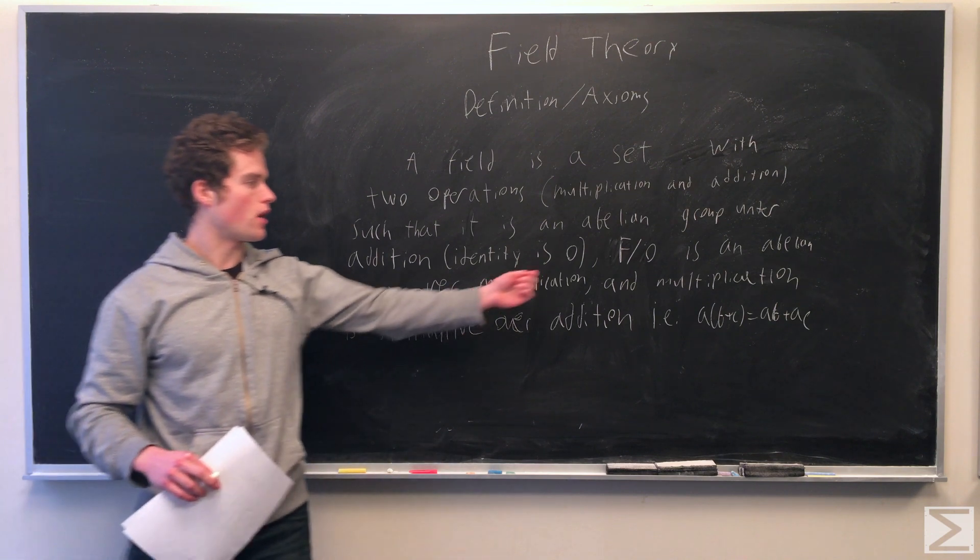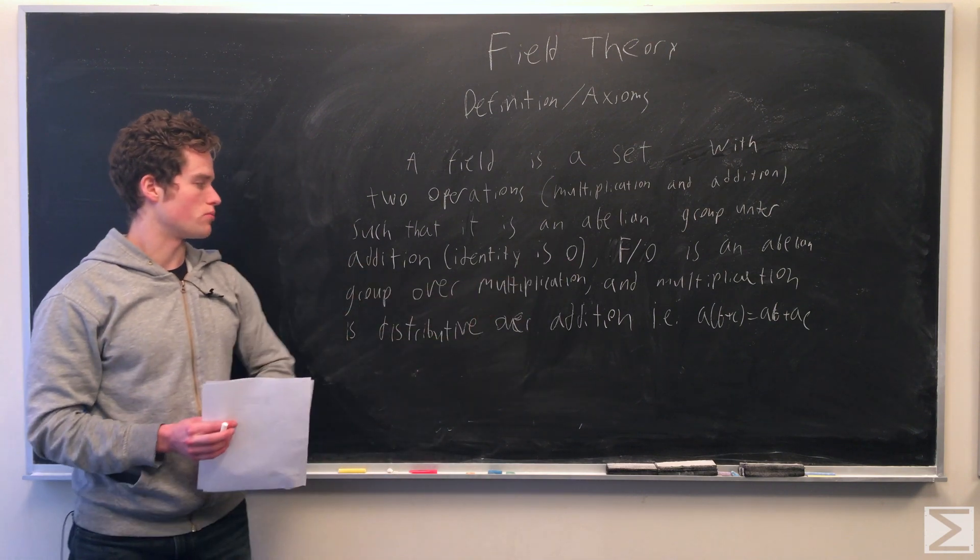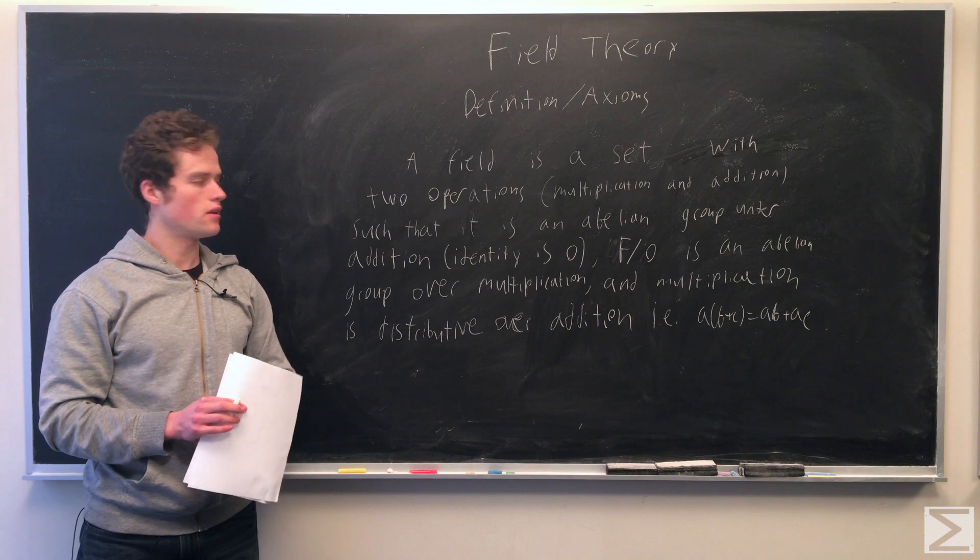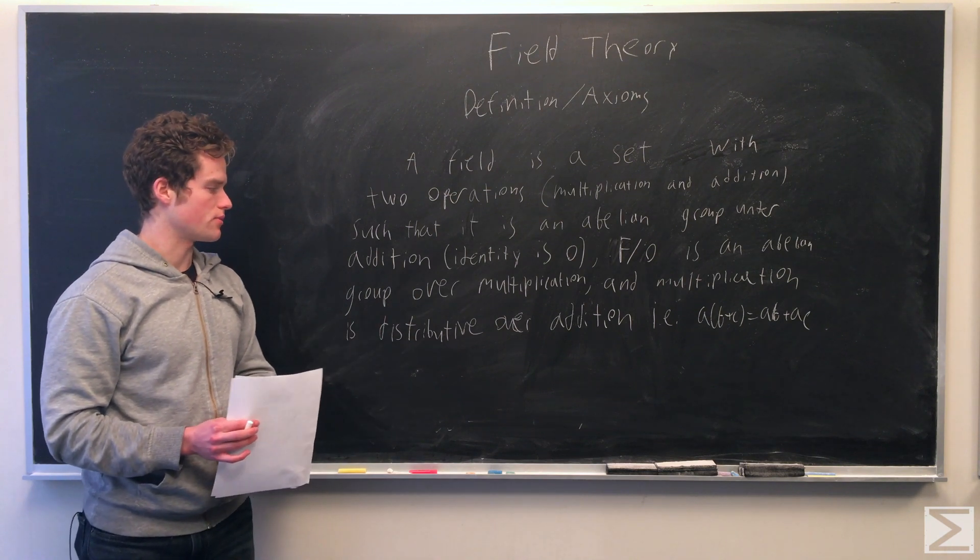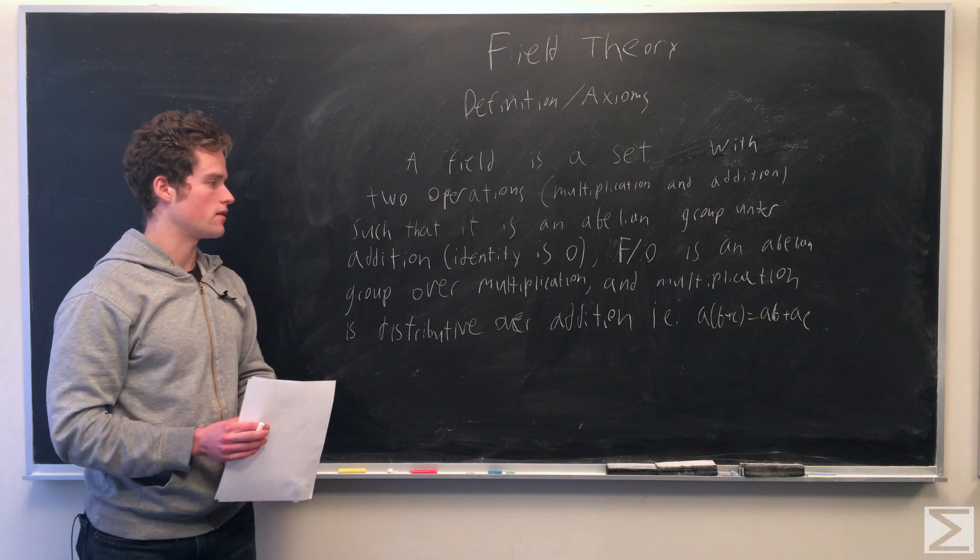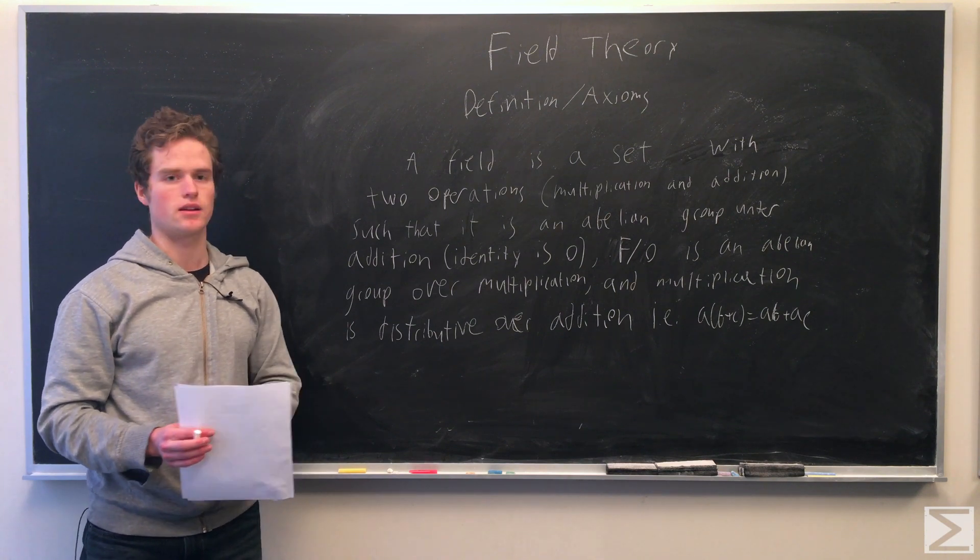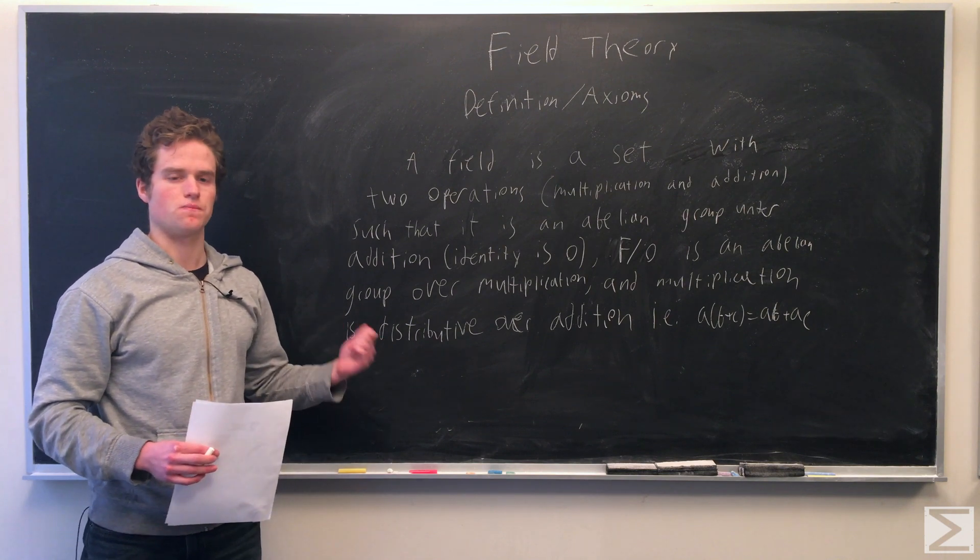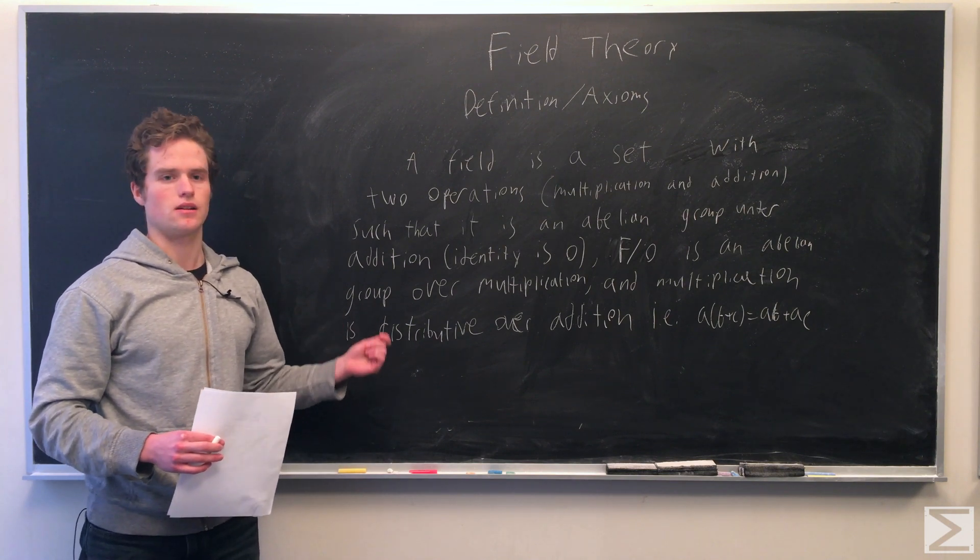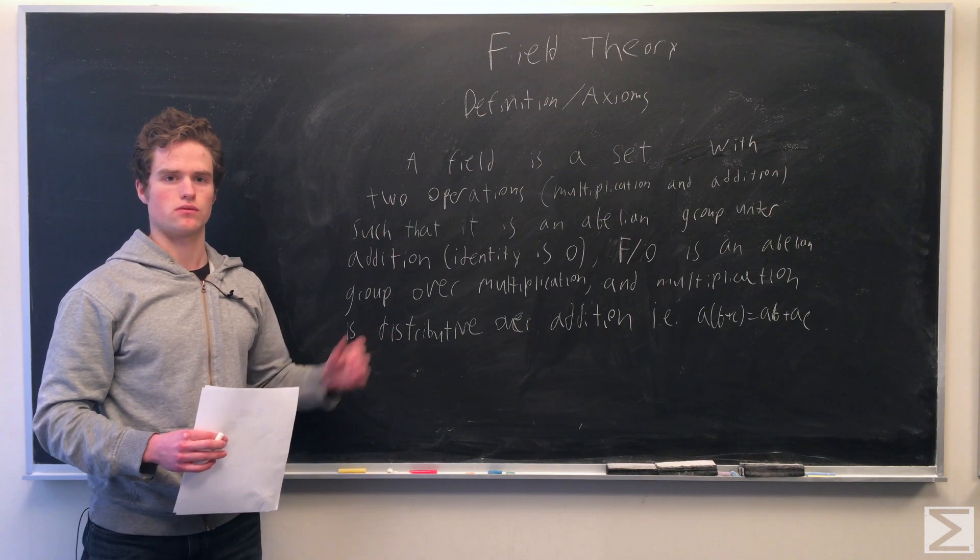And then F not including zero is an abelian group over multiplication, and the last axiom is multiplication is distributive over addition. So A times (B plus C) is A times B plus A times C. This is the basic definition of a field, a generalization of rational or real numbers.